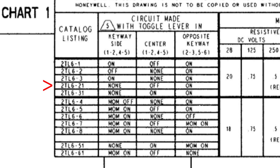If you look at the 2TL6-21, that has a central off position. There is no switch position on the keyway side, and there's an on position on the opposite keyway. So the 2TL6-21 only moves between the central position and one on position — you can only go from off to on and back again: two positions. I would call that a single throw switch.